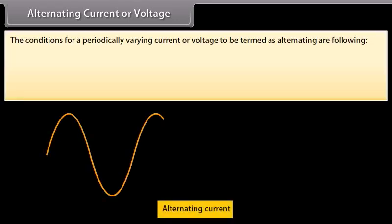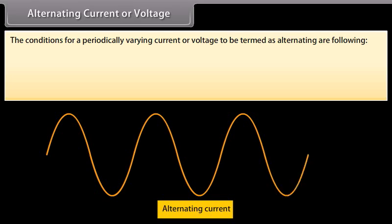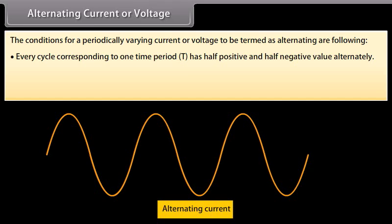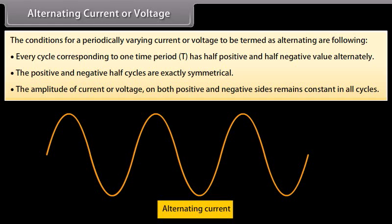The conditions for a periodically varying current or voltage to be termed as alternating are the following. Every cycle corresponding to one time period has half positive and half negative value alternately. In case of current, the direction of current reverses after every half cycle; in case of voltage, the polarity of potential difference reverses after every half cycle. The positive and negative half cycles are exactly symmetrical, and the amplitude of current or voltage on both positive and negative sides remains constant in all cycles.